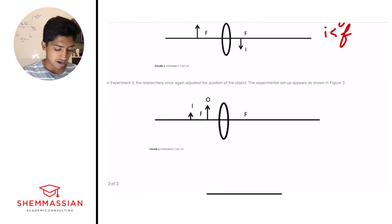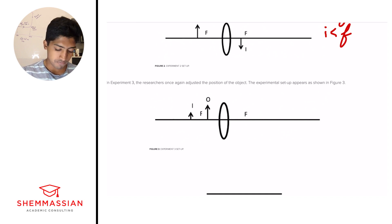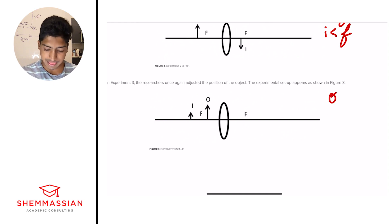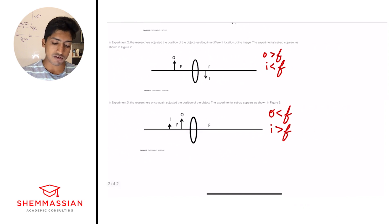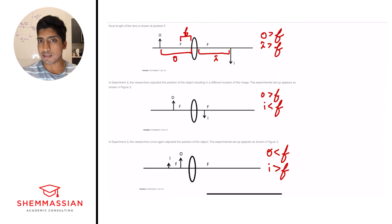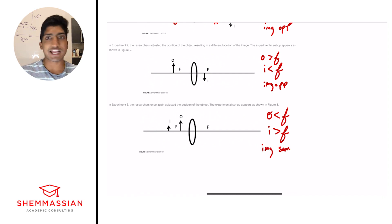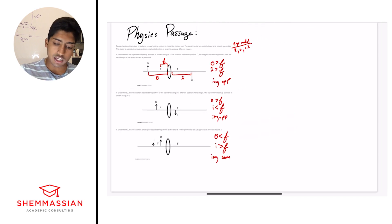In experiment three, the researchers once again adjusted the position of the object. The experimental setup appears as shown in figure three. We've had three different experiments with three different object distances changing. In this case, the object distance is less than the focal length, and the image distance is greater than the focal length. You could also note where the image is relative to the object — image opposite, image opposite, and then image same — but that's optional.